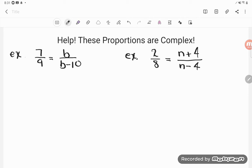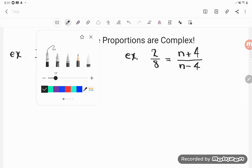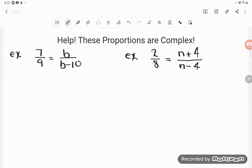First thing is this is a proportion problem. How can I recognize a proportion problem when I see one? What you're going to see is a fraction equal to another fraction. A proportion is equivalent equal ratios or relationships. So we have a relationship between 7 and 9 that's equal to the relationship between b and b minus 10.